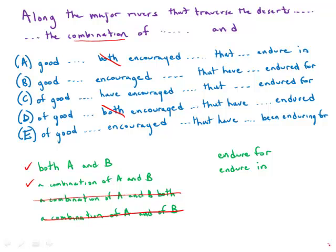That eliminates C, D, and E right away. So right away it looks like we're zeroing in pretty quickly on B. Also notice that the correct idiom with the verb endure is endure for a certain time, not endure in a certain time.